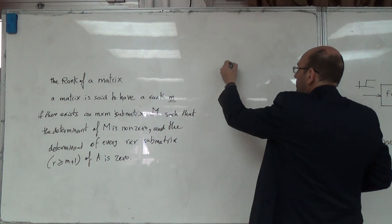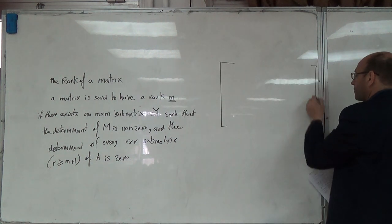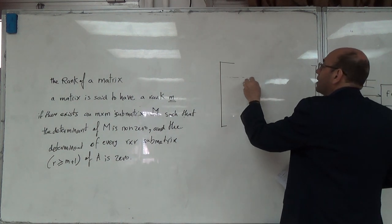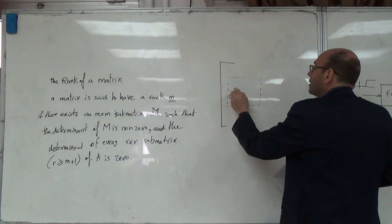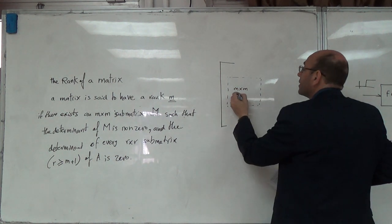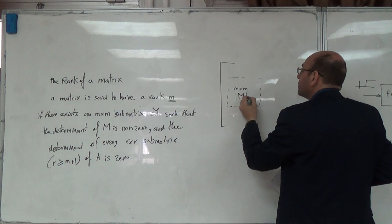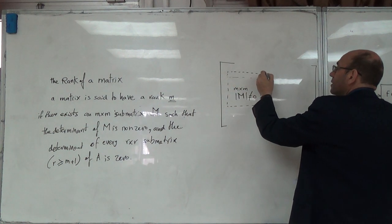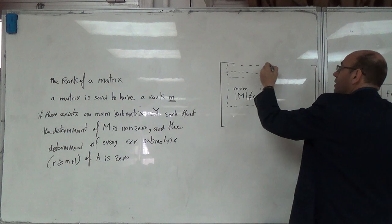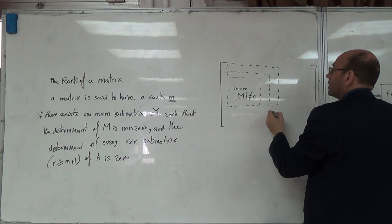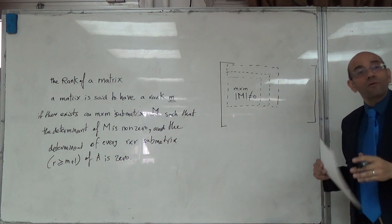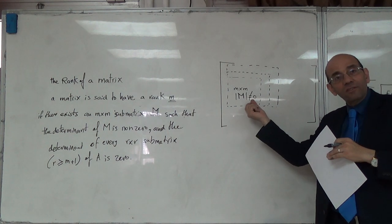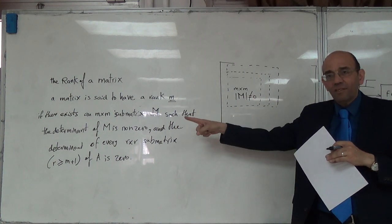Let me draw this to make it clearer. If I have this matrix here, regardless of its dimensions, if you search inside this matrix and find at least an M by M submatrix called M whose determinant is not zero, and any matrix larger than it - call it R - all of those have determinant zero. It's like I'm saying: what is the largest submatrix whose determinant is not zero? Isn't this easier than that definition?